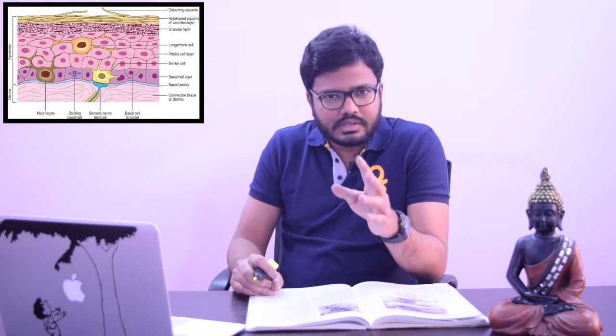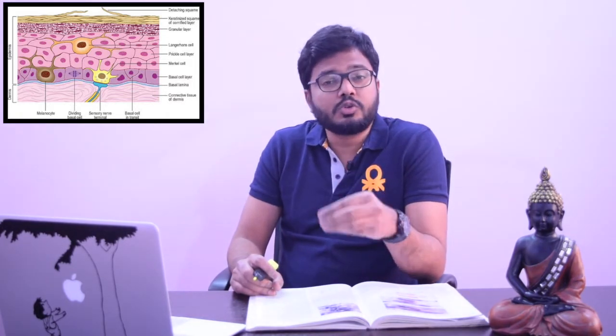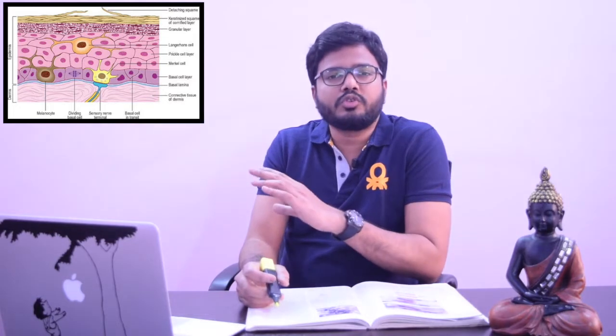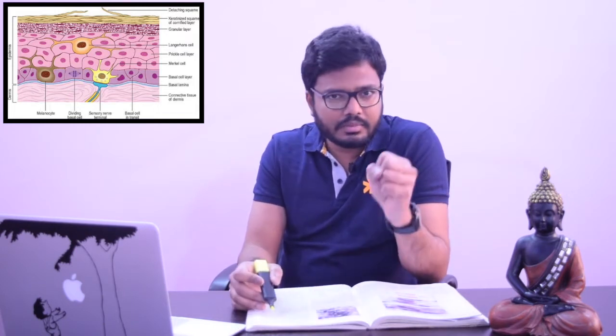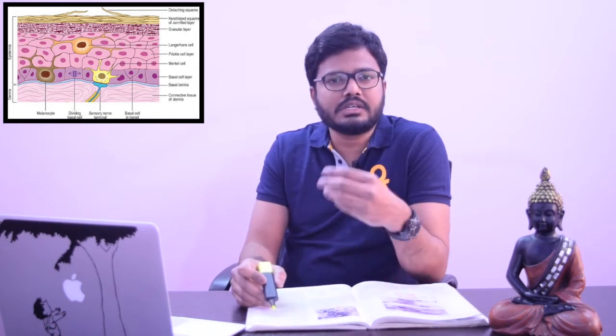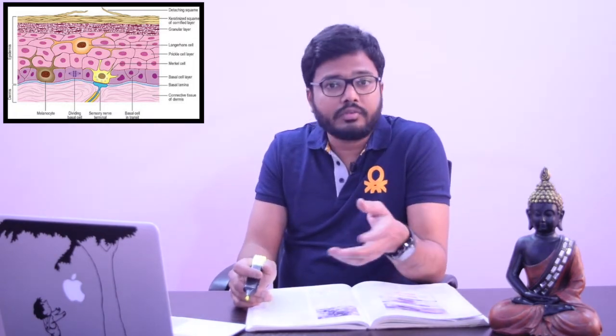Non-keratinocytes are cells which do not possess cytokeratin filaments; hence they do not have the potential to keratinize. Absence of cytokeratin filaments is very important. They do not show mitotic activity, do not undergo maturation or desquamate, are not arranged in layers, and do not form desmosomal attachments with adjacent keratinocytes. They are usually dendritic — meaning branching — and appear unstained or clear in routine hematoxylin and eosin stains. They are identified by special stains or immunocytochemical methods and mostly originate from neural crest cells or bone marrow.